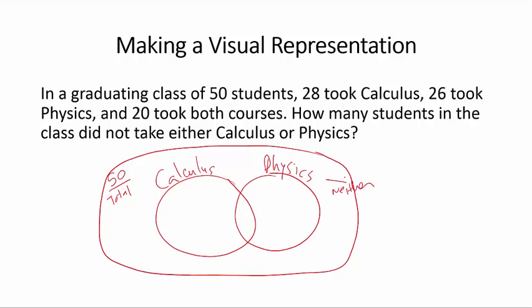Now we know that there are 20 students who took both courses, and that there are 28 students who took calculus. I write this outside of the circle, not inside, because I already have 20, so I only need 8 more to complete 28 students.